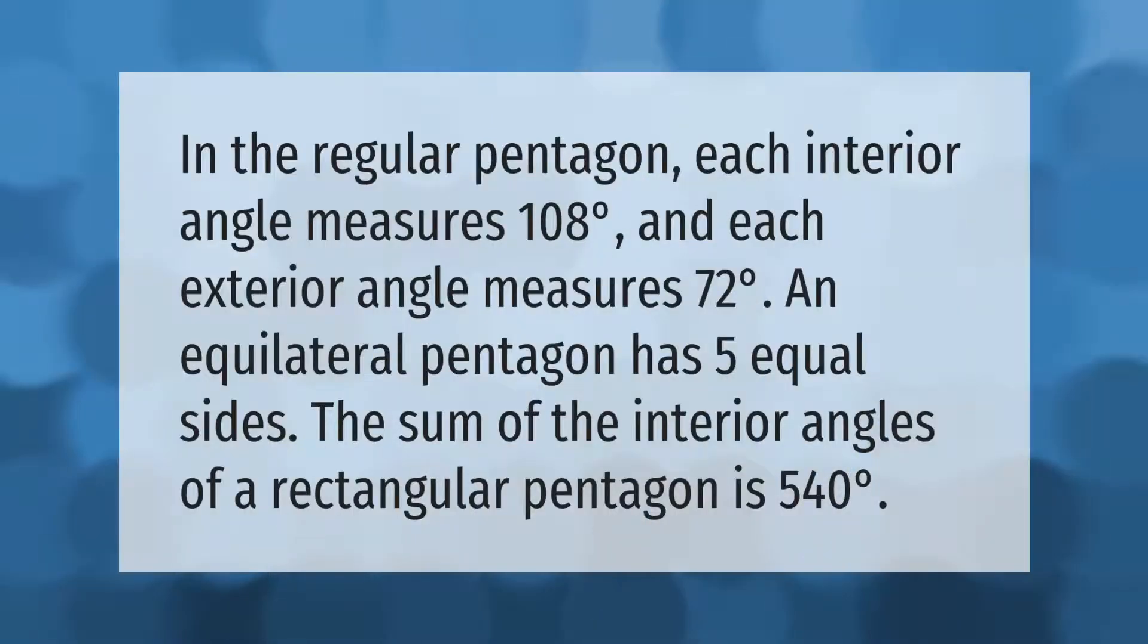In a regular pentagon, each interior angle measures 108° and each exterior angle measures 72°. An equilateral pentagon has five equal sides. The sum of the interior angles of a rectangular pentagon is 540°.